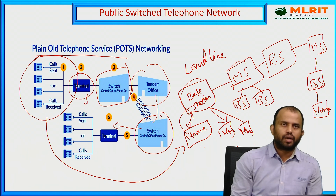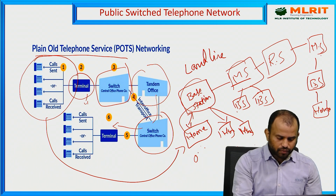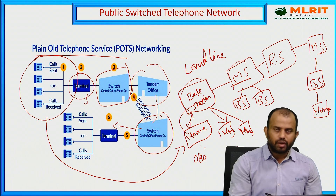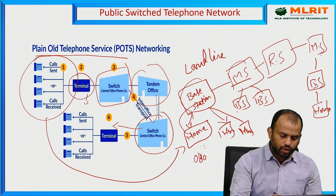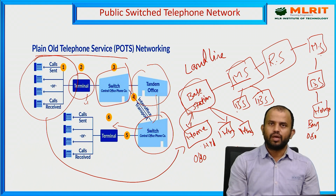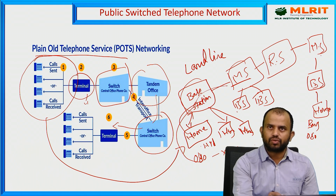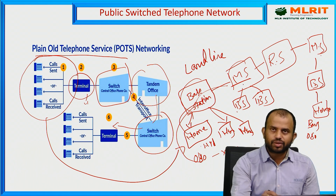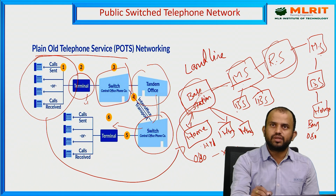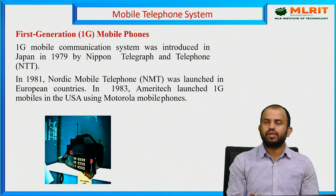For example, to dial a person from Hyderabad to Bangalore using the 080 code, the call goes from the home network to the base station, then to the main station. The main station identifies the destination as Bangalore and routes the information to the tandem office, which connects the Hyderabad zone to the Bangalore zone. The call then travels in reverse through the destination's terminal to the receiver's home network.